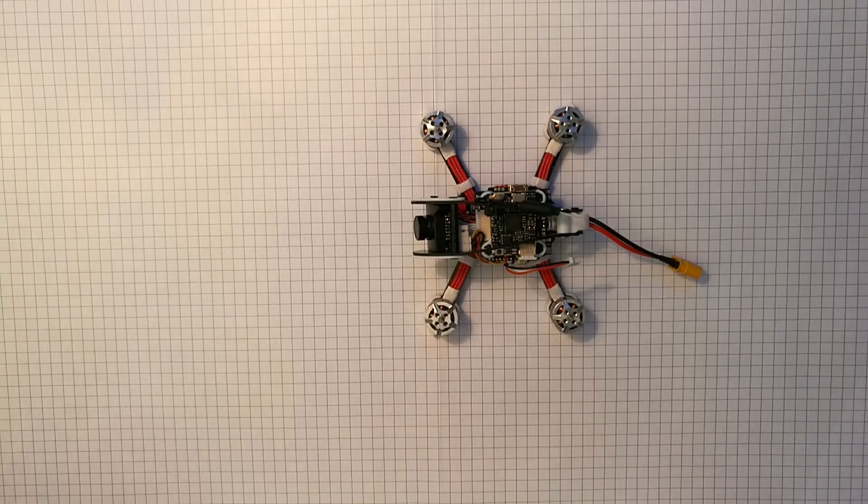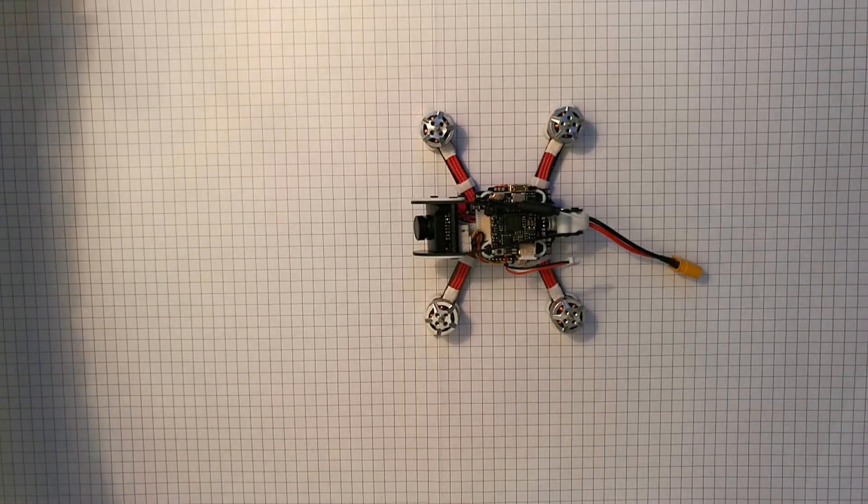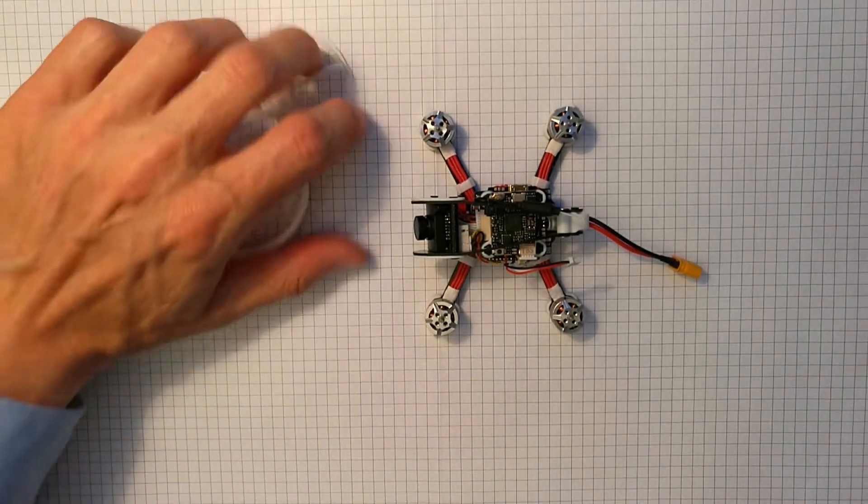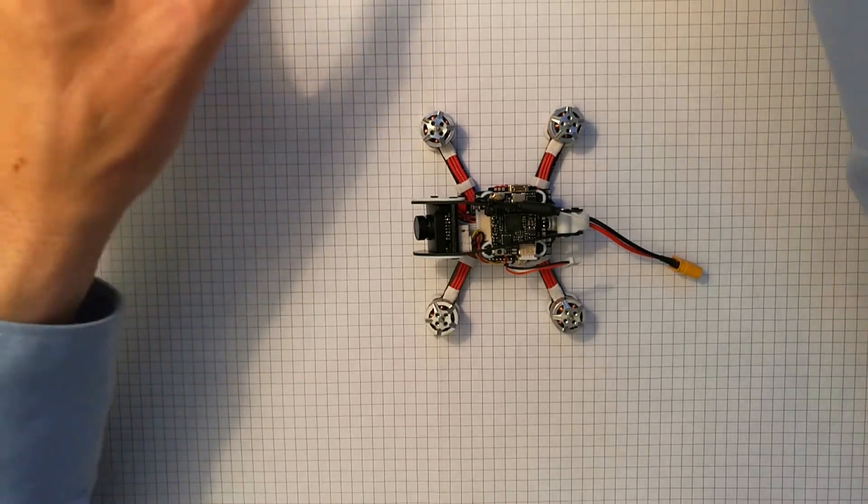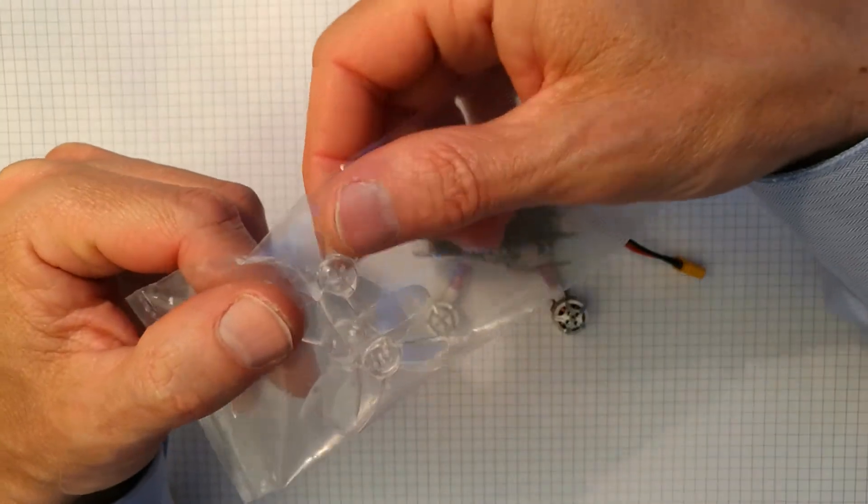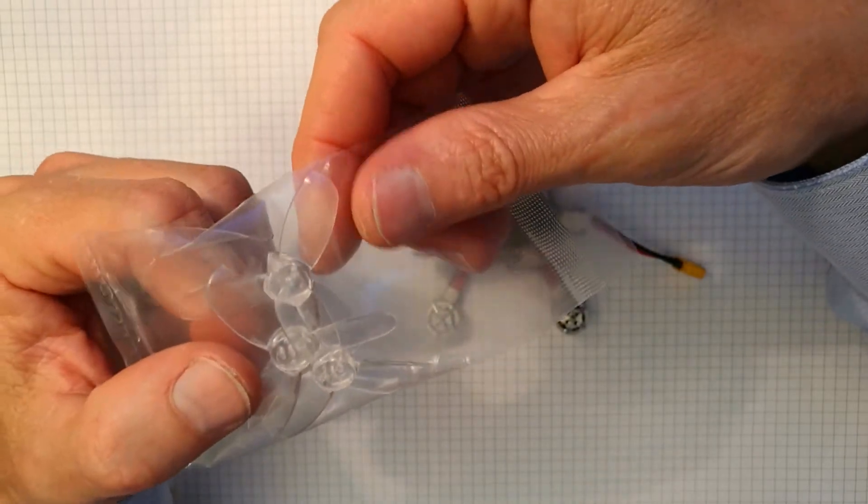The package includes a couple of extras. We've got the prop guards here. I guess there's nothing new with them. But they include a different style of propellers now, which come in clear plastic and are labeled to be 1940s.